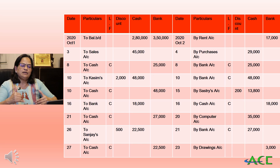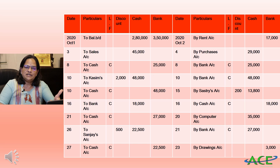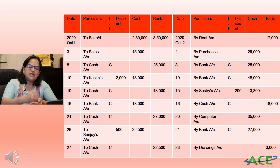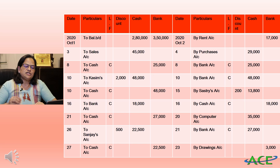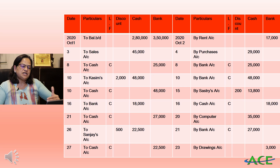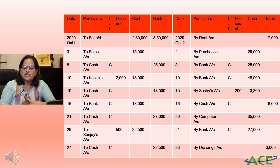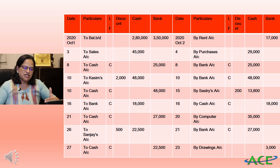October 10th — Kasim's check deposited in bank — contra entry: 'By Bank Account' with 48,000 in the cash column and 'To Cash Account' contra entry with 48,000 in the bank column. October 15th: 'By Shastri's Account' 13,800 in cash column and 200 in the discount column. October 16th — contra entry: 'To Bank Account' 18,000 in the cash column on the debit side; on the credit side 'By Cash Account' contra entry with 18,000 in the bank column.